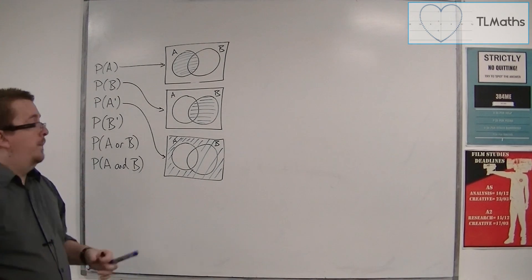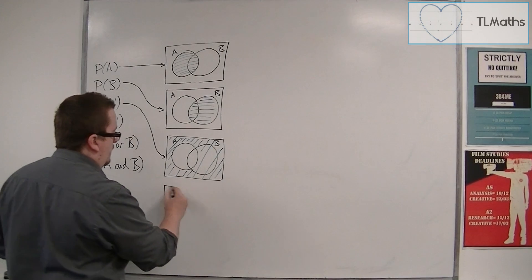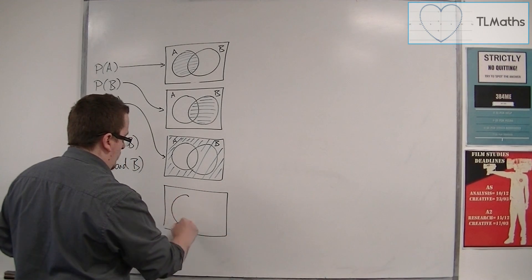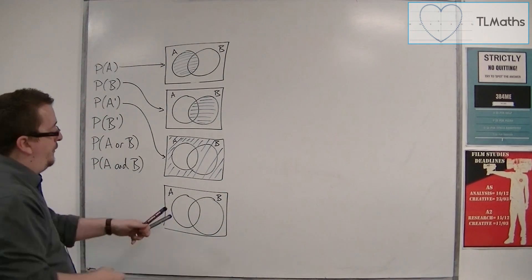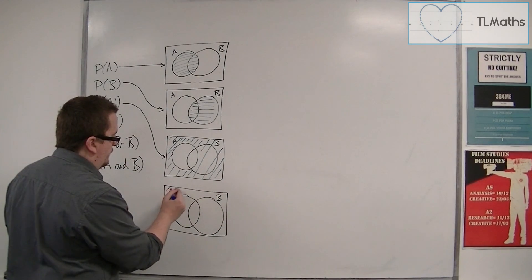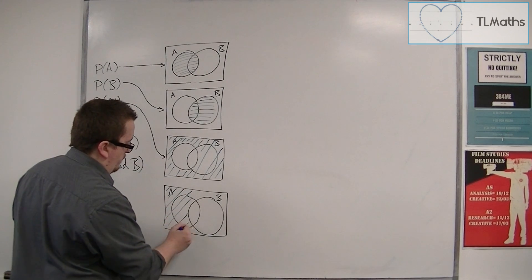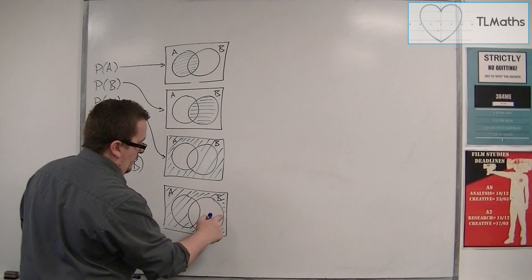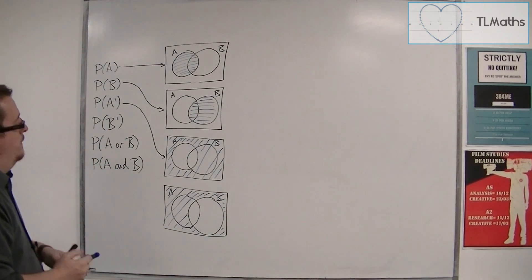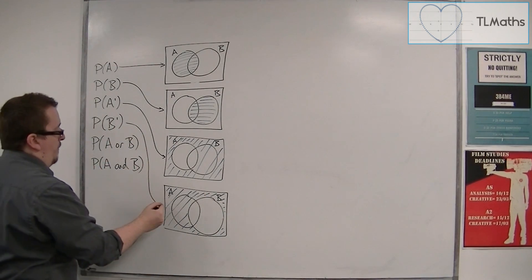If we're doing not B, then it's a very similar case. It's anything that's outside of the circle B. So that would be the probability of not B.